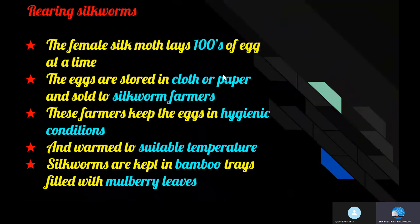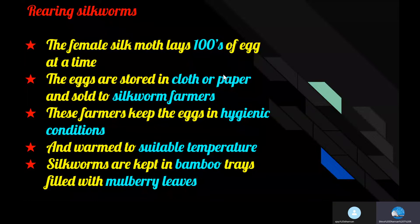Rearing silk moths: A female silk moth lays hundreds of eggs at a time. The eggs are stored carefully on strips at controlled temperature and humidity. The eggs are warmed to a suitable temperature for the larvae to hatch. The tiny and delicate worm needs a lot of care, and a silent and hygienic environment is a must for its survival.